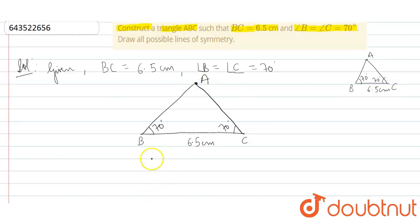So by this we have constructed triangle ABC. We can also measure the sides AB and AC with the ruler.